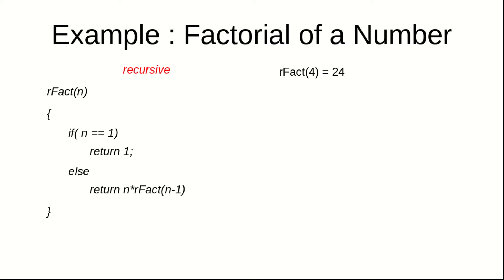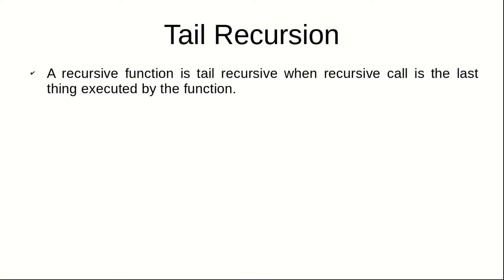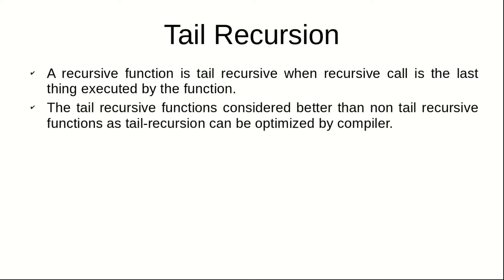Now let us change the way we solve the problem. This approach is called tail recursion. Tail recursion is still a form of recursion, but as the name suggests, the recursive call is placed at the tail of the function. If the last thing executed by the function is a recursive call, it is known as tail recursion. Compilers are equipped to optimize these forms of recursion using tail call optimization, so they don't consume as much memory as normal recursion.